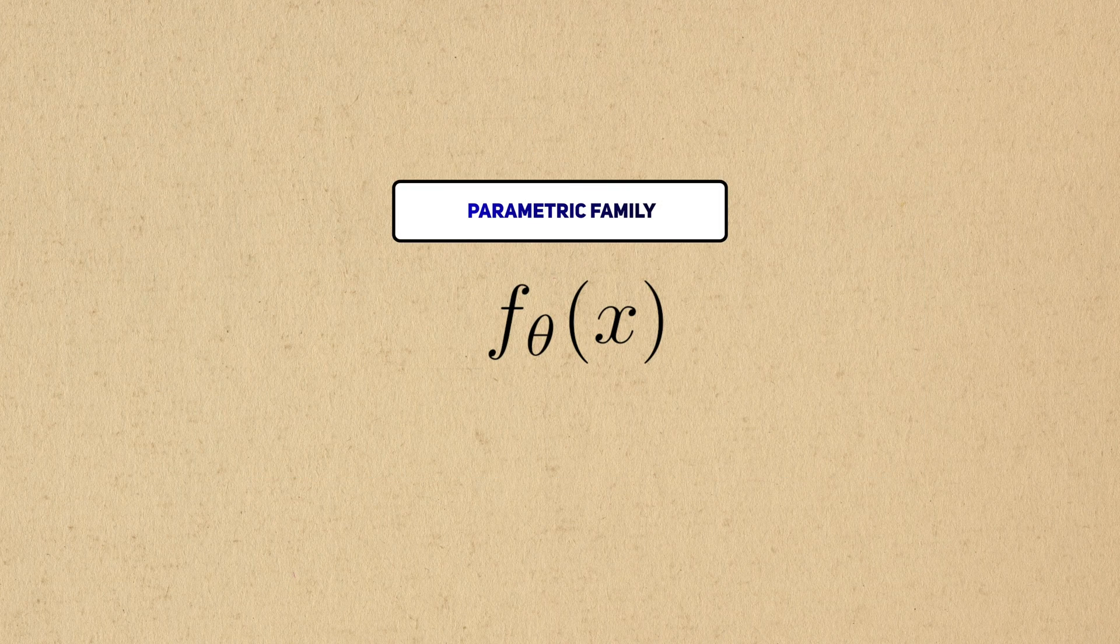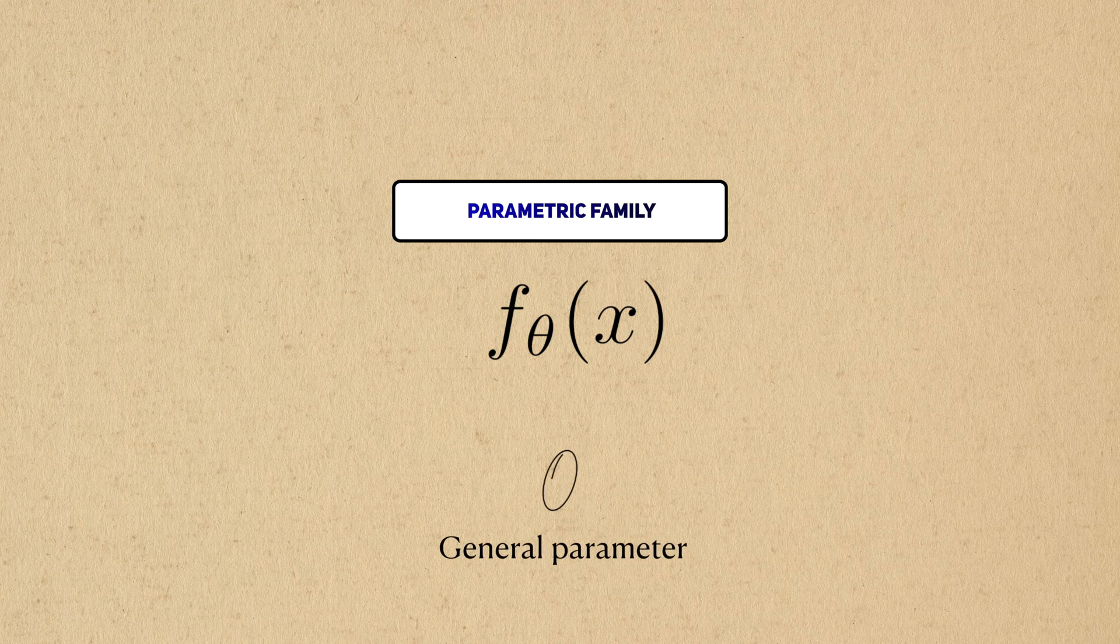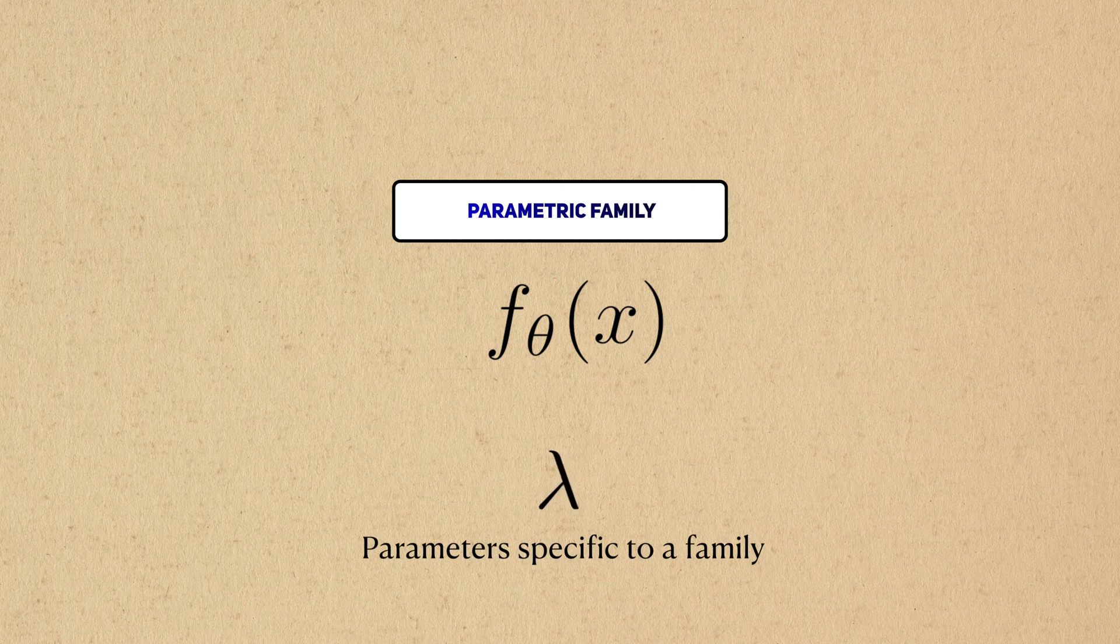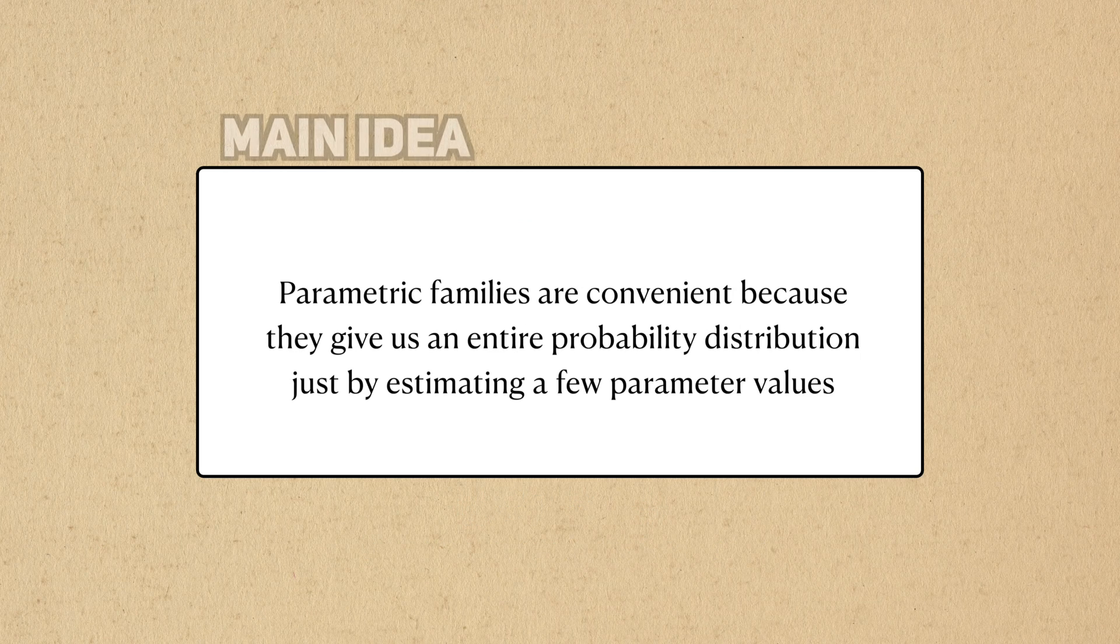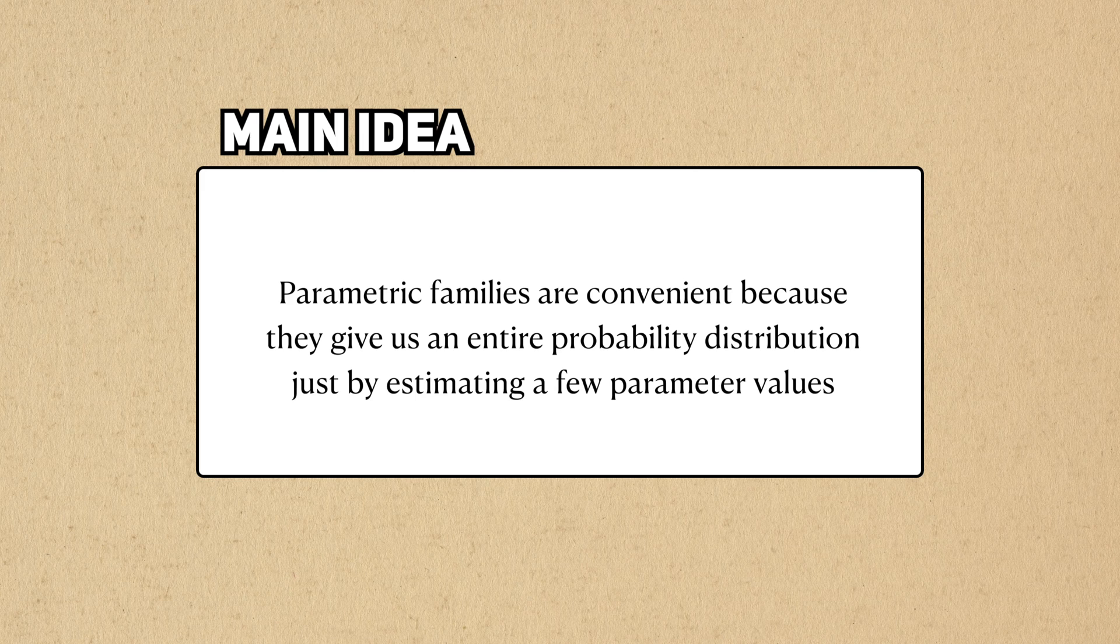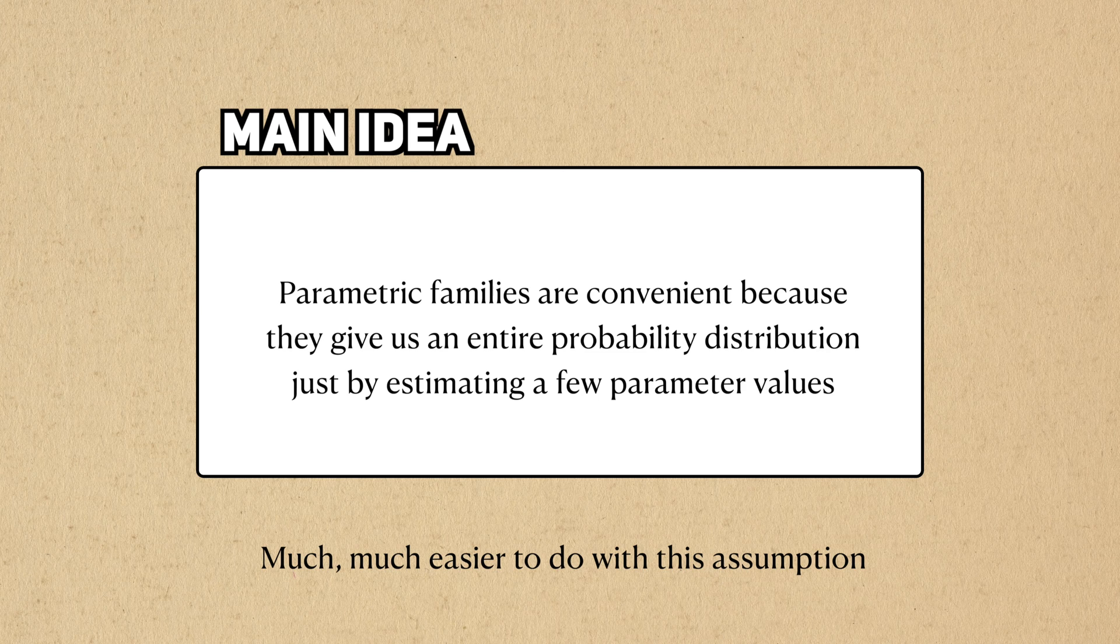Parameters, as a general idea, are typically denoted with the Greek letter theta. When we start looking at more specific parametric families, different letters might be used. Instead of needing to estimate infinitely many values for the probability distribution, we only need to estimate a few. Our goal is to know the probability distribution, and assuming a parametric family can make this easier.